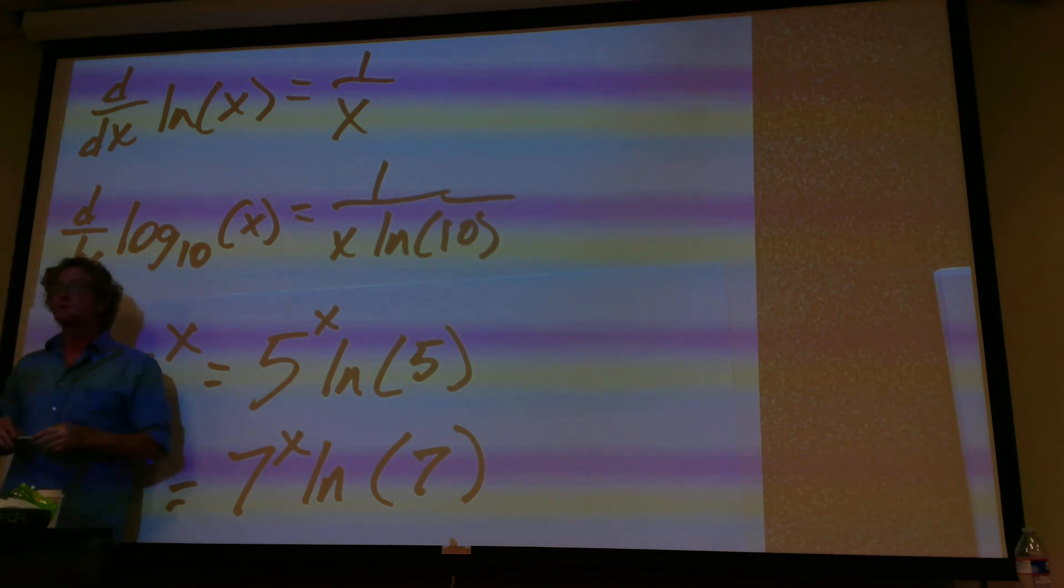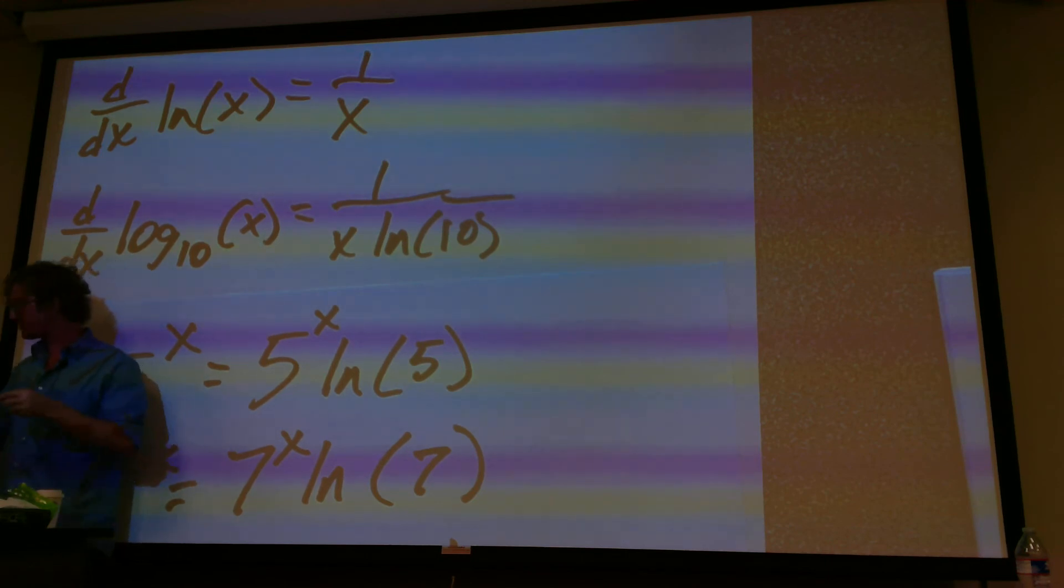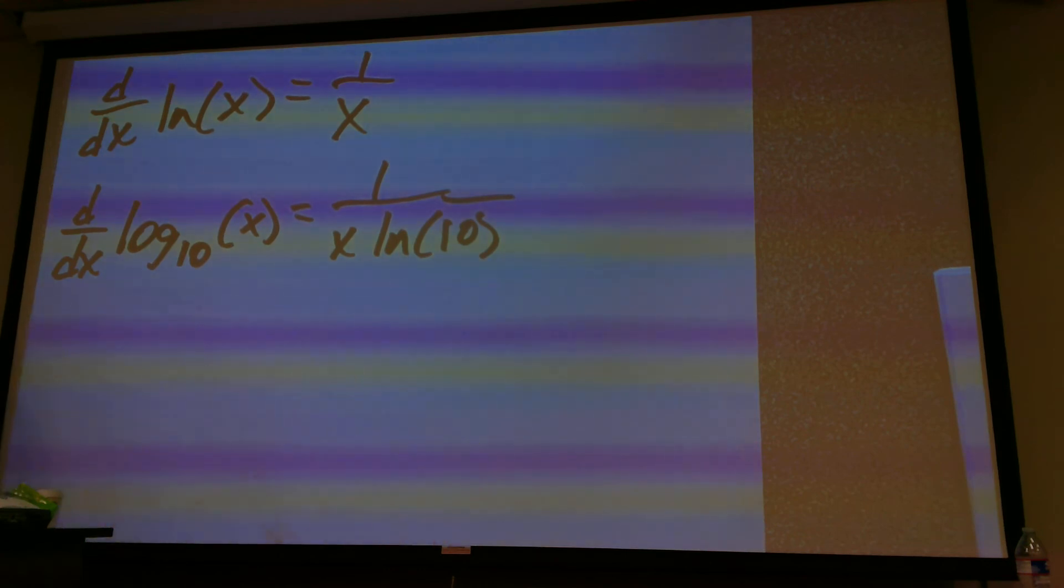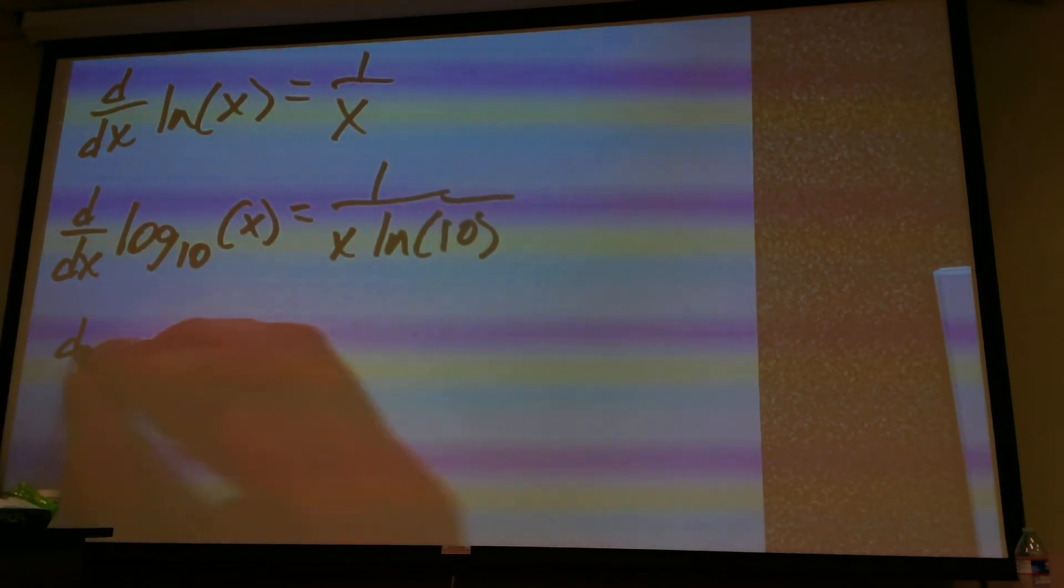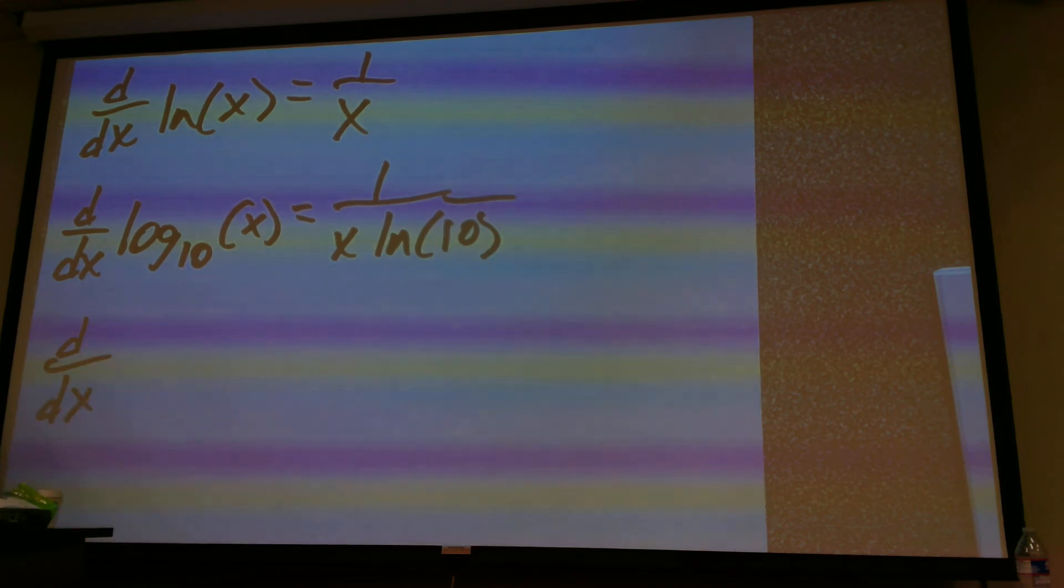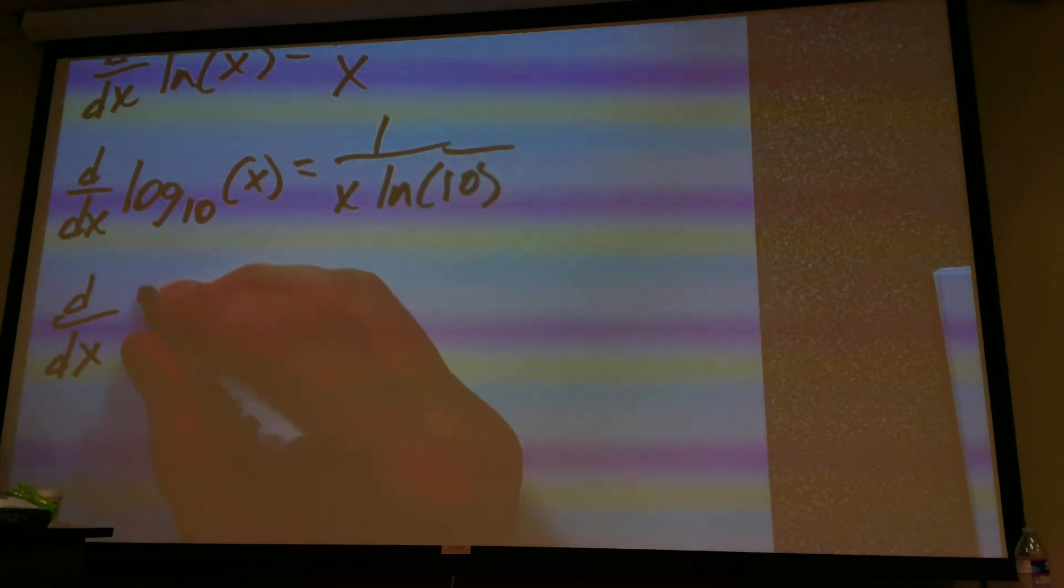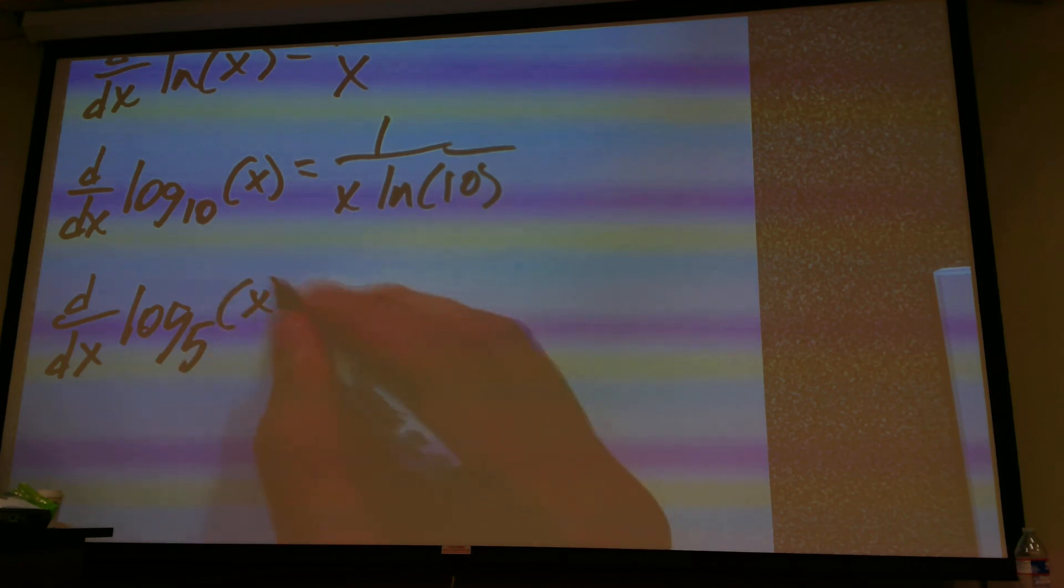And so, whenever you're taking the derivative of logarithms, what it really wants to do is force it down to the bottom of the fraction. So, the derivative with respect to x of, let's say, log base 5 of x, and that would be 1 divided by x natural log of 5.